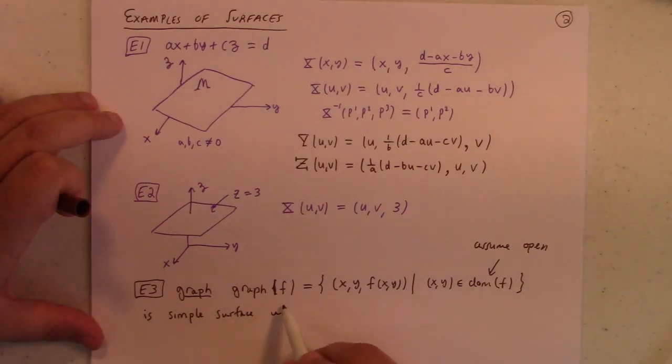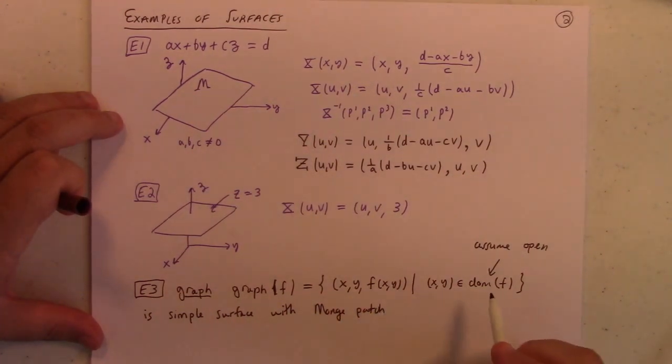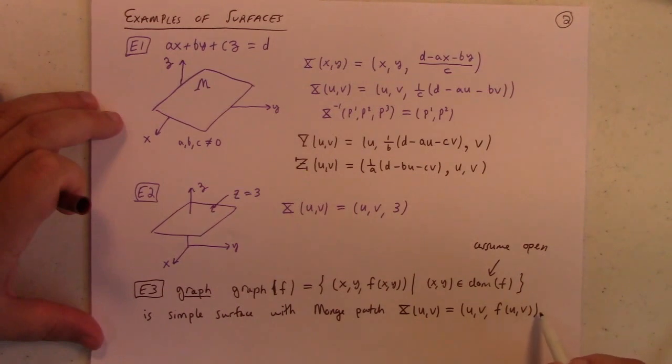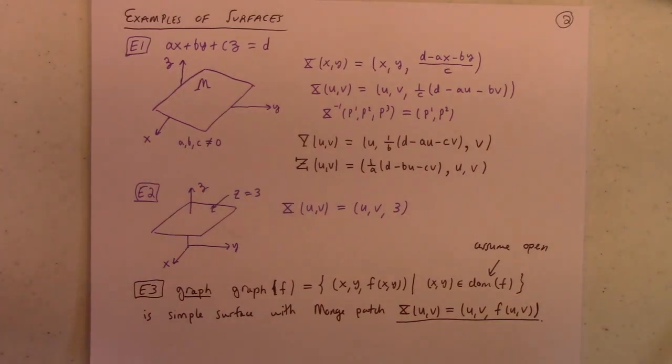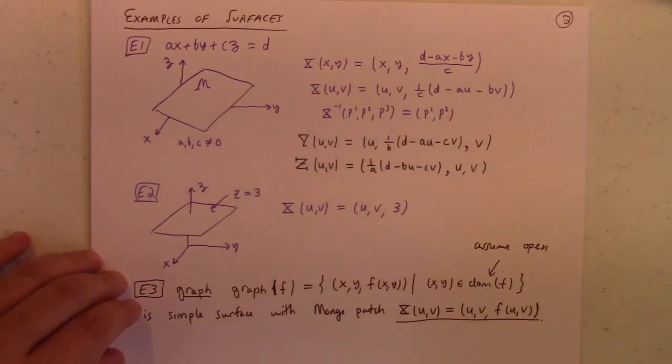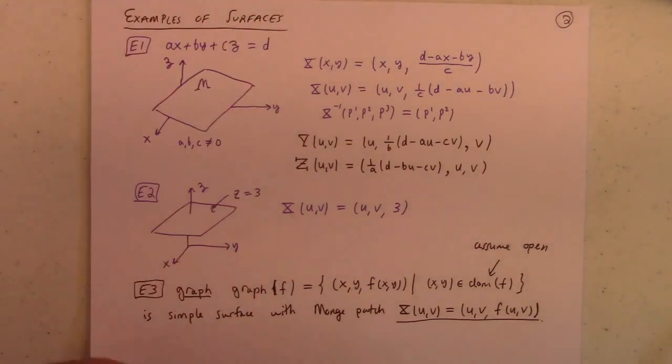And the patch is called a monge patch, who is a mathematician who did a lot of this stuff back in the day. So the monge patch would be x of u, v equals to u, v, comma, f of u, v. In fact, this is pretty much all that certain multivariate calculus texts do, everything with this thing, which is, I don't know. It does a lot, but come on. It's more to life than graphs. But a graph is an example of a surface.